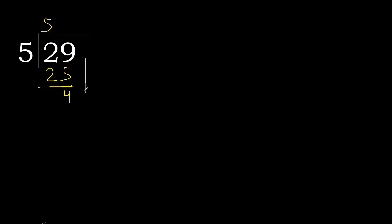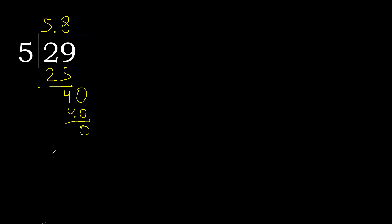Next — there is no next digit, therefore we complete with 0. Here, with a decimal point: 0, point. 40. 5 multiplied by 8 is 40. Exact: 40 minus 40 is 0.